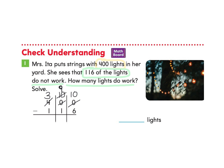Since we don't have any tens to add to, we now have 10 tens. We take one of those tens and bring it to the ones column, leaving nine tens and giving us 10 ones. Now we subtract: 10 take away six is four. Nine take away one is eight. Three hundreds take away one hundred is two. So the answer is 284 lights.